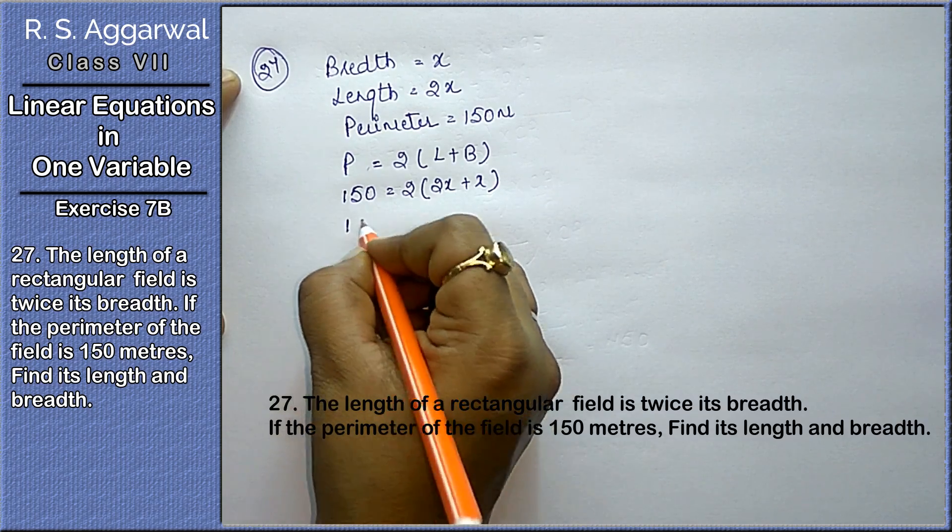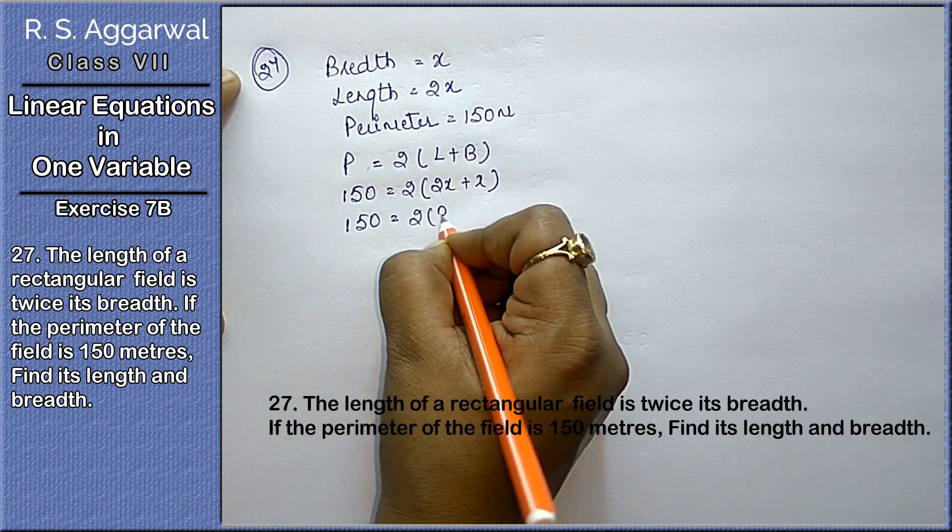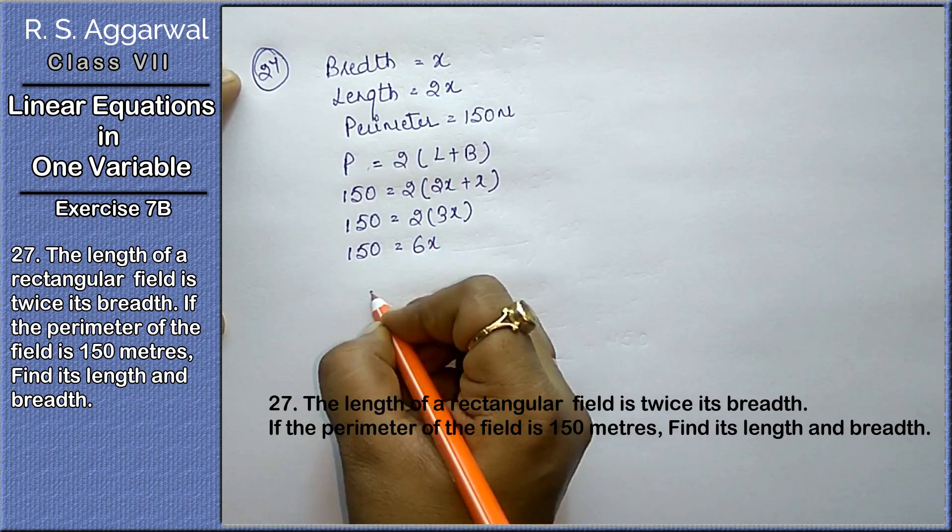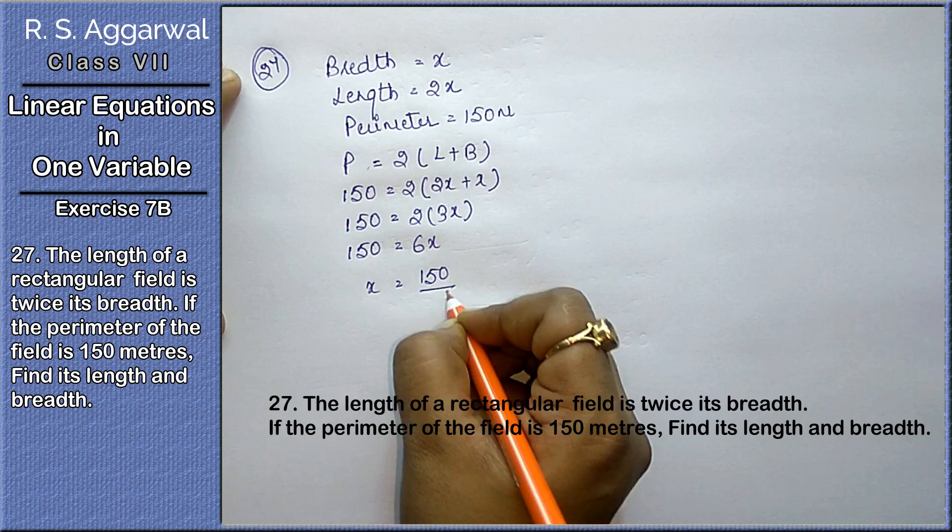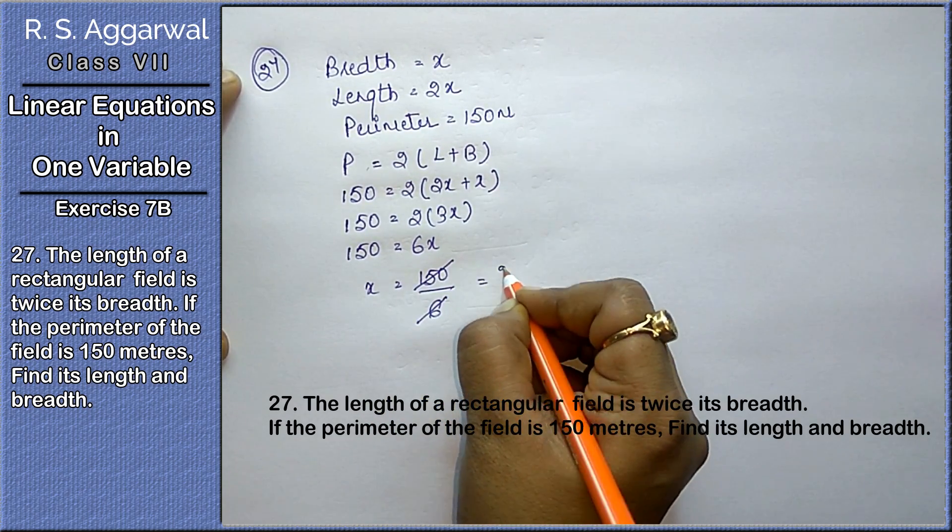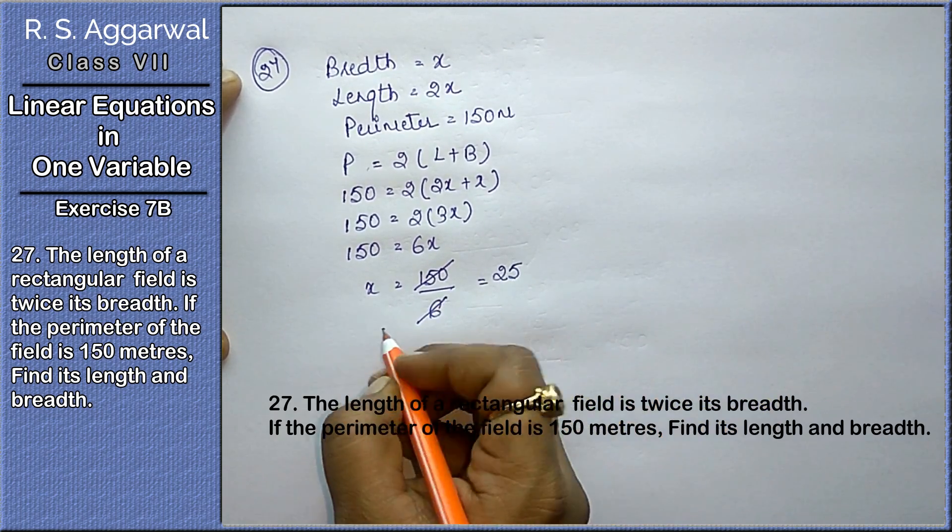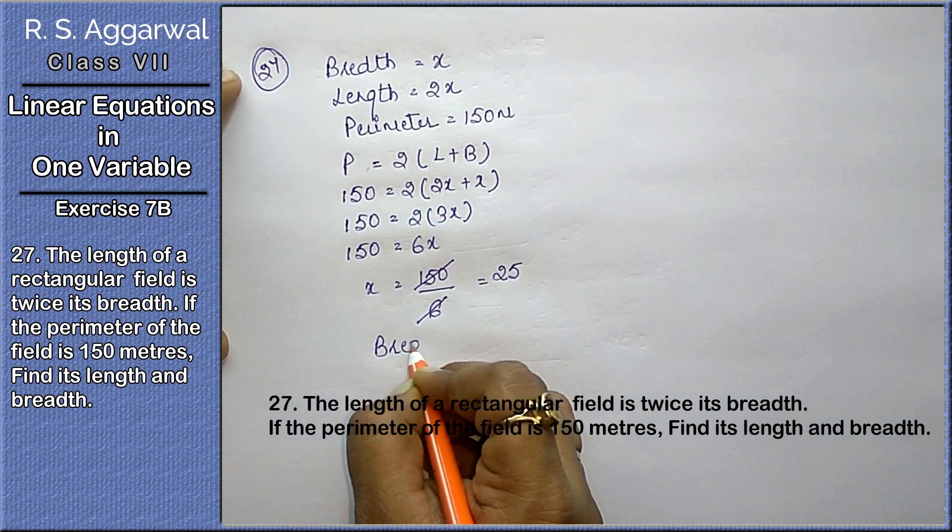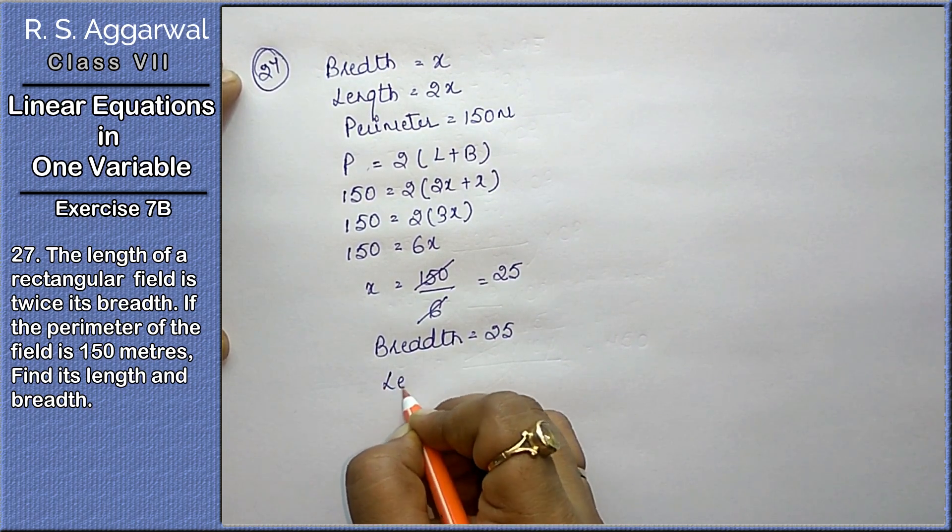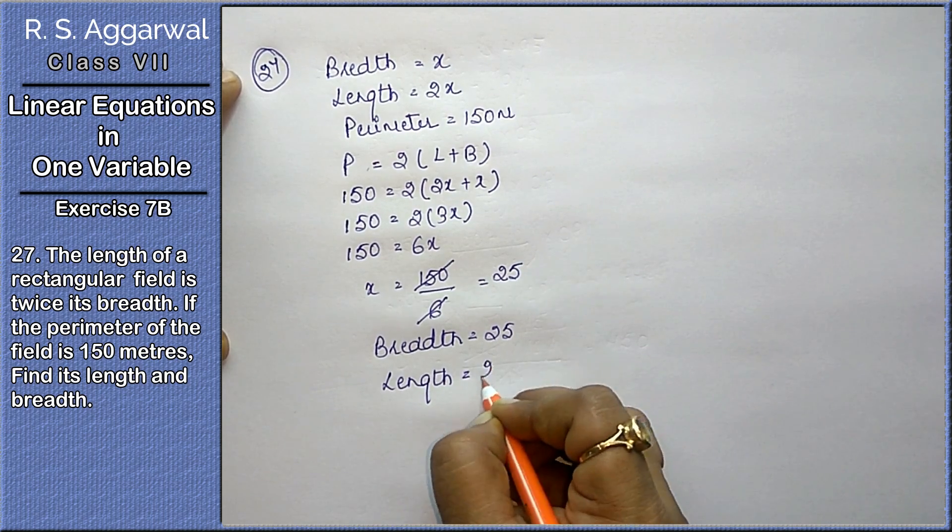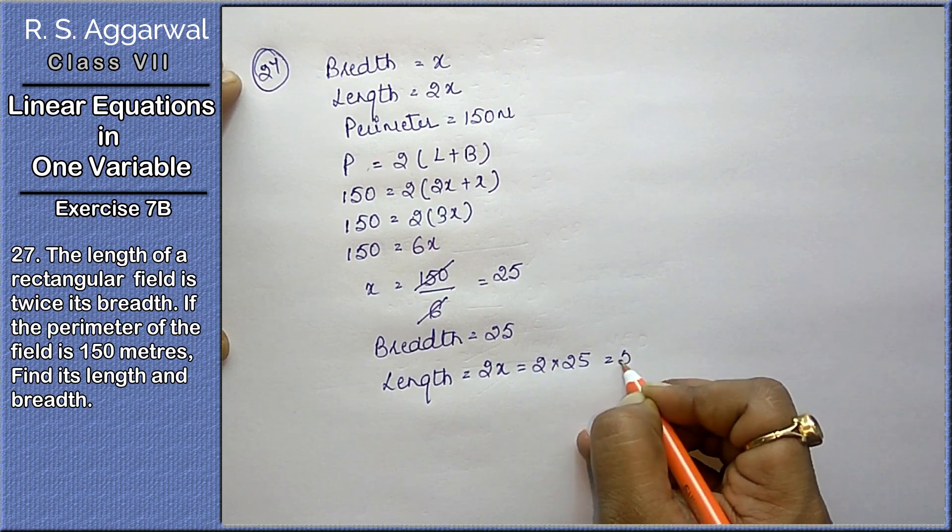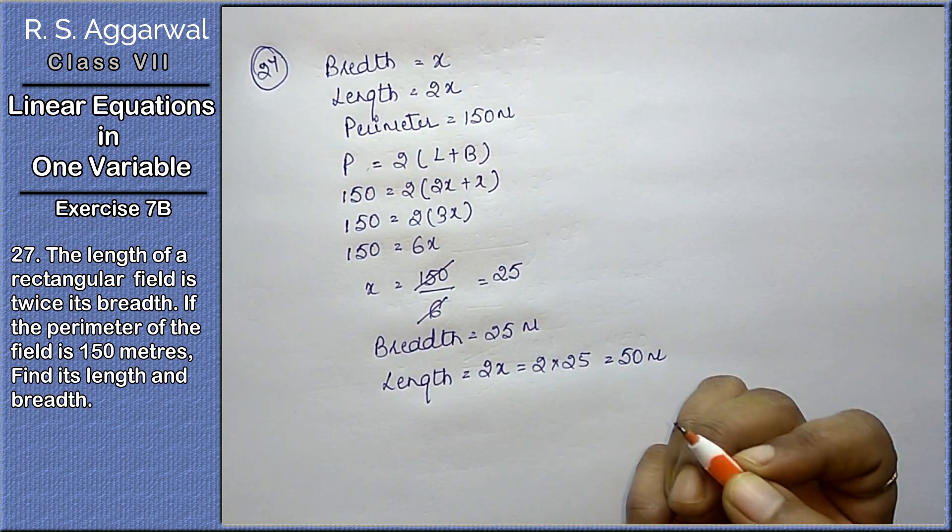That means 150 equals to 2 into (2x plus x), which is 6x. So x equals to 150 upon 6, which is 25. That means breadth is 25 meters and length is 2 into 25, that means 50 meters.